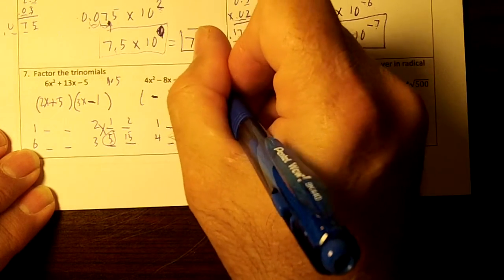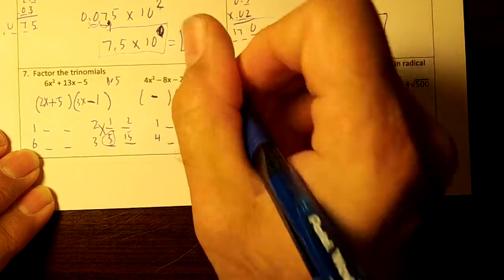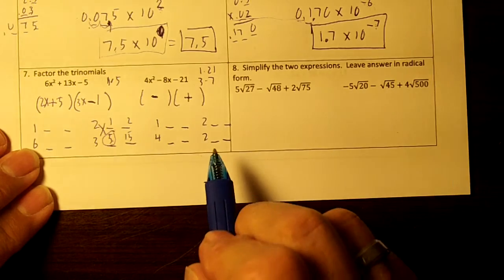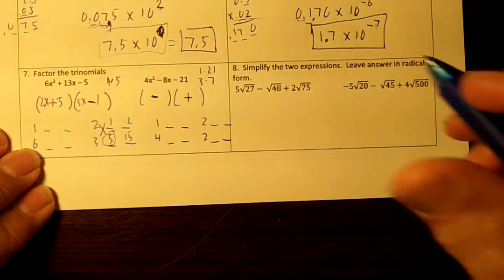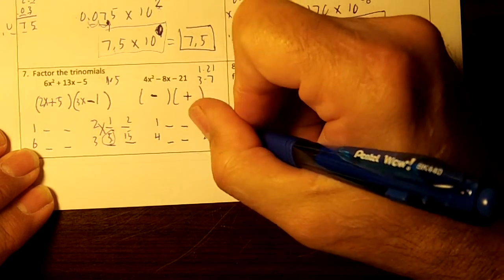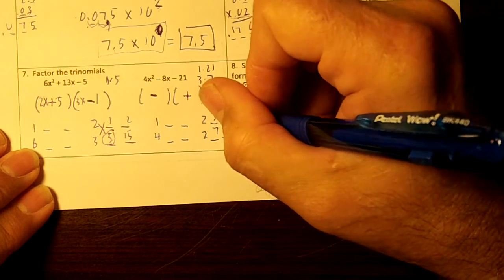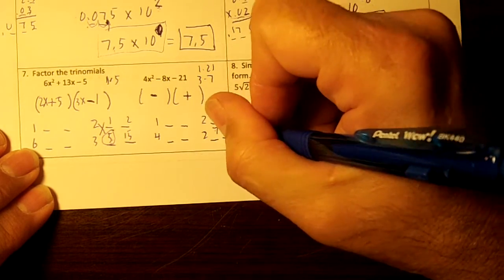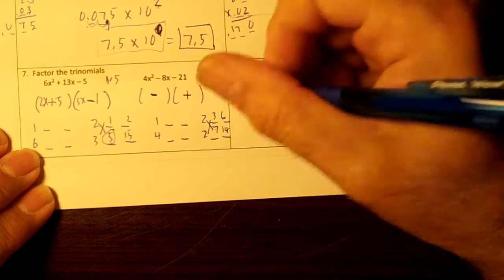Factors of 21 are 1 and 21 and 3 and 7. We need to subtract and get 8. I see what works. 3 and 7. 2 times 3 is 6. 2 times 7 is 14. 14 minus 6 is 8, isn't it? Draw your bar in here.